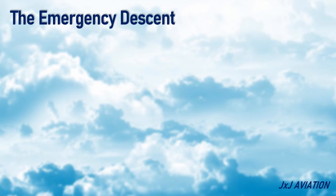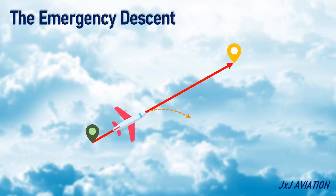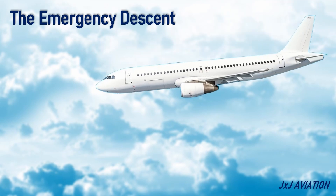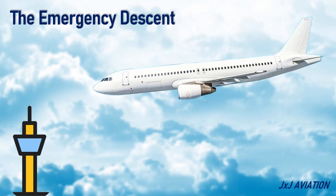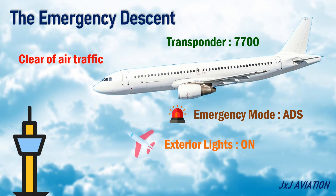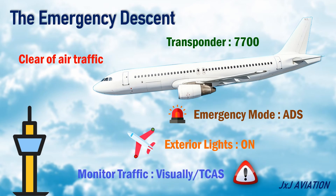During an emergency descent, in most cases, the aircraft would have to turn away from the assigned route. These details would be mentioned in the contingency procedures for a particular route. The ATC must be notified as soon as possible about the descent. The transponder code is set to 7700 and emergency mode is set on the Automatic Dependent Surveillance, ADS, as applicable. This will ensure that the planned emergency descent route is cleared of other air traffic. All exterior lights should be on and the traffic should be monitored visually and using TCAS.